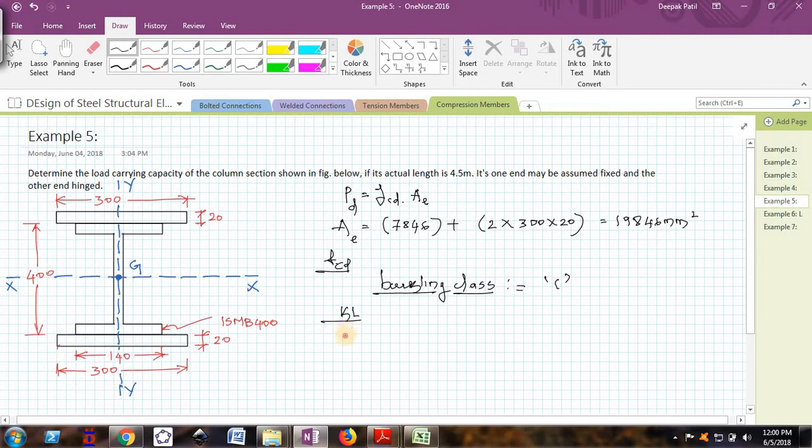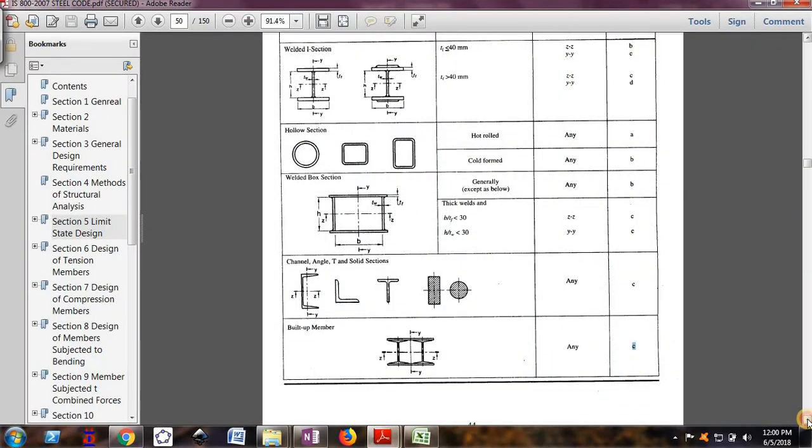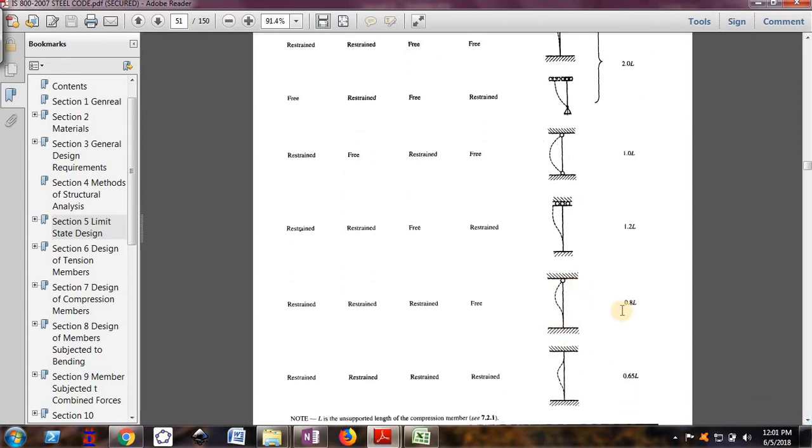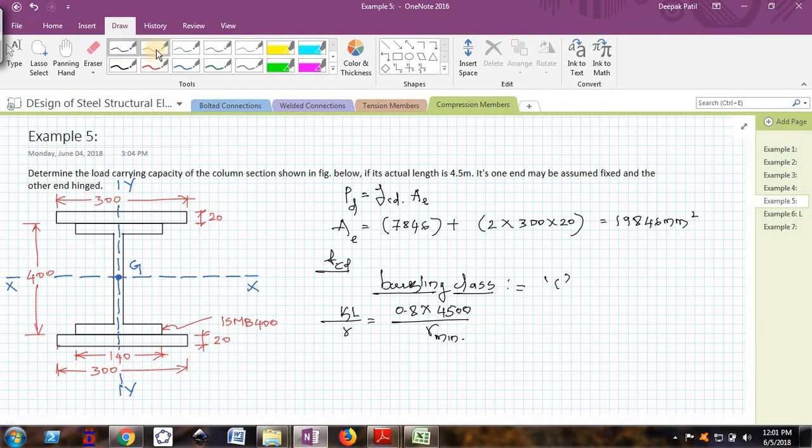Next thing I want to find is KL/R. To find K, he has given that one end is fixed and the other end is hinged. IS 800 gives this table. Here it comes: one end is fixed and the other end is hinged, K = 0.8. So it is 0.8 times the length of the column which is 4500, divided by R minimum.